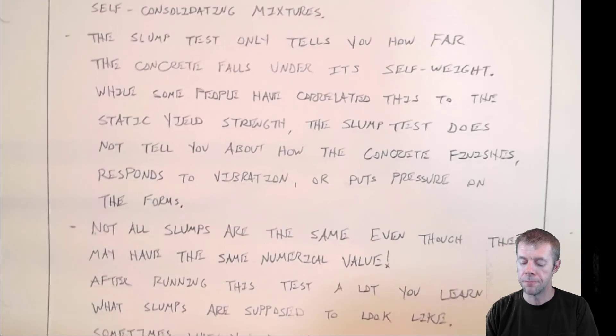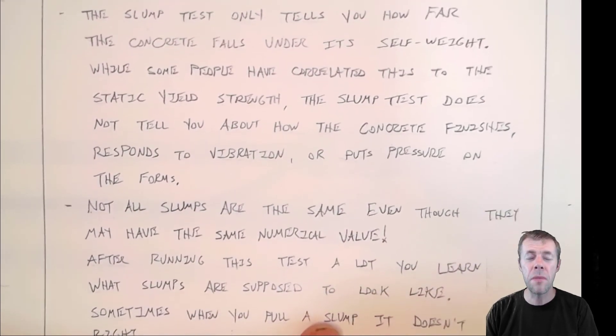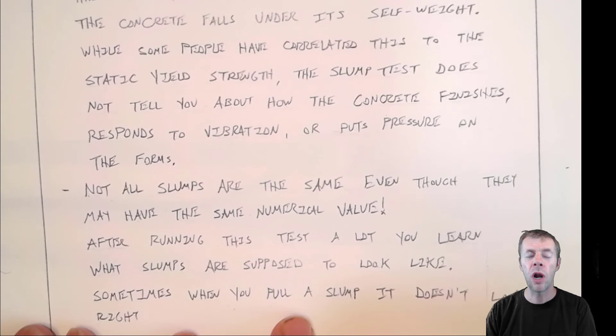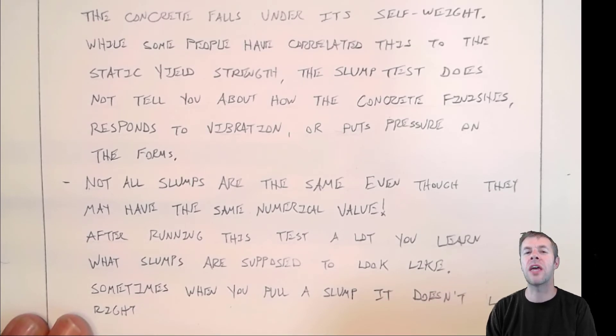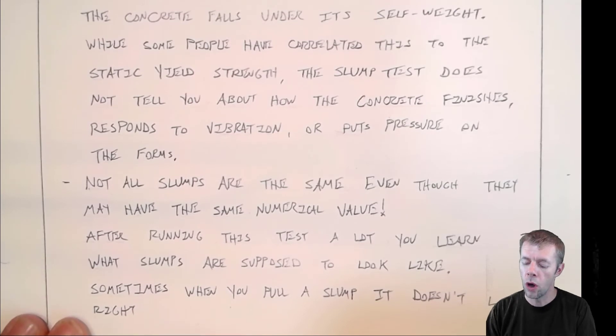But not all slumps are the same, even though they may have the same numerical value. What I mean by this is just because you have three mixes that have a four inch slump, that doesn't mean they have the same workability or the same consistency. What? Yeah. What I mean by that is there's more to it than just the numbers. You have to look with your eyes and see what's going on. And you have to really know what a slump is supposed to look like. And sometimes when you pull a slump and it doesn't look right, you need to know what that means. Let's get into that now.